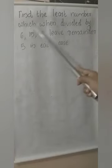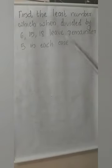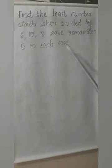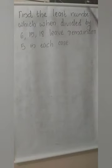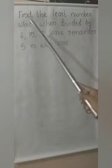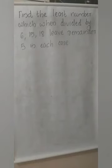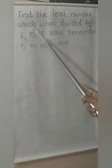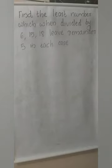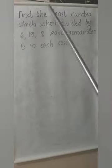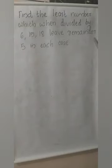Next question: Find the least number which when divided by 6, 15 and 18 leaves a remainder of 5 in each case. We need to find the least number such that when divided by 6, 15 or 18, we get a remainder of 5. Here they are asking for the least number, so we find the LCM. If we find the LCM of 6, 15 and 18, we get a number divisible by all three. But here it should leave a remainder of 5, so first we find the LCM.